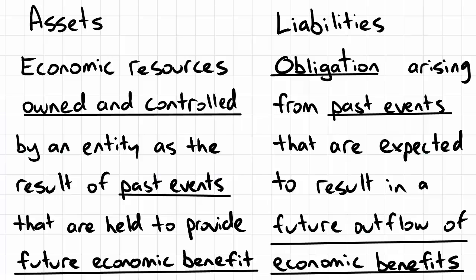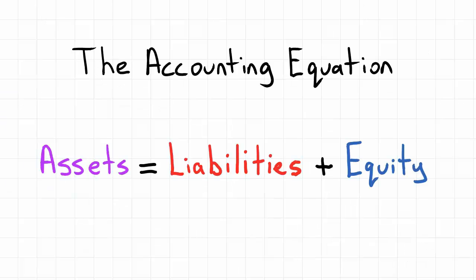We've defined assets and liabilities, but we have not yet defined equity. In order to do that, instead of coming up with another sentence and going over more key characteristics, it's easier to go straight to the accounting equation. The accounting equation is as follows: assets are equal to liabilities plus equity. We know what assets are and we know what liabilities are — equity's definition can effectively be derived from this equation.